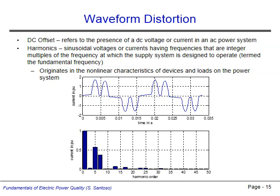A DC offset is the presence of a DC voltage or current in an AC power system. When such an offset is present, the average voltage or current of the system will be non-zero. Harmonics are sinusoidal components of voltage or current waveforms that have frequencies that are integer multiples of the fundamental power frequency. Harmonics occur due to loads on the power system that have non-linear voltage current characteristics. The figure here shows a current waveform with significant harmonic components. The lower graph shows the waveform's spectral content, identifying large contributions from the fifth and seventh harmonics.